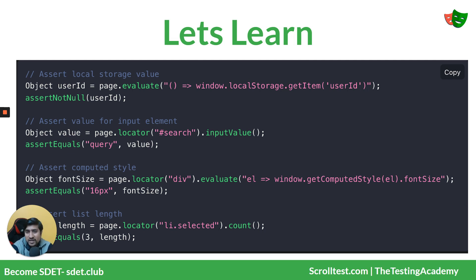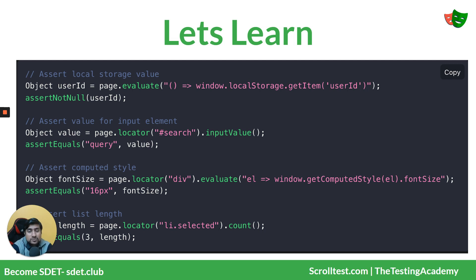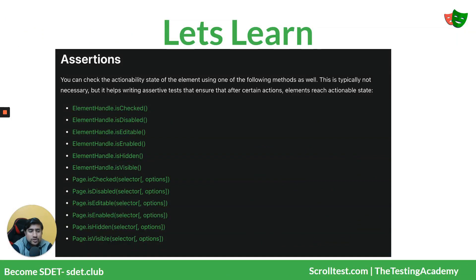If there is a local storage item with the ID 'userId', it will give you the details in the object. Also, page.locator.inputValue lets you get the input value of a locator. If you want to evaluate further, you can use page.locator.evaluate. If you want to count the total number of list elements, you can use the count method. There are lots of useful functions already created in Playwright that you can leverage.